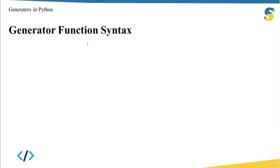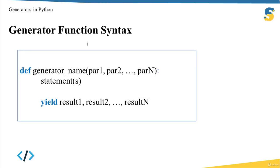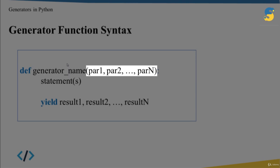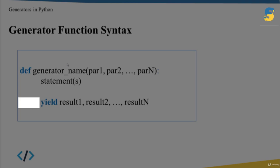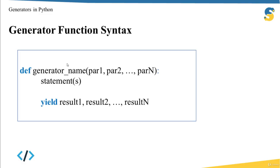Now let's talk about generator function syntax. A generator function is very similar to a traditional function: you use the 'def' keyword, give it a name, provide parameters and statements with indentation — but the key difference is that you use the 'yield' statement instead of 'return' to return a value from the generator function.